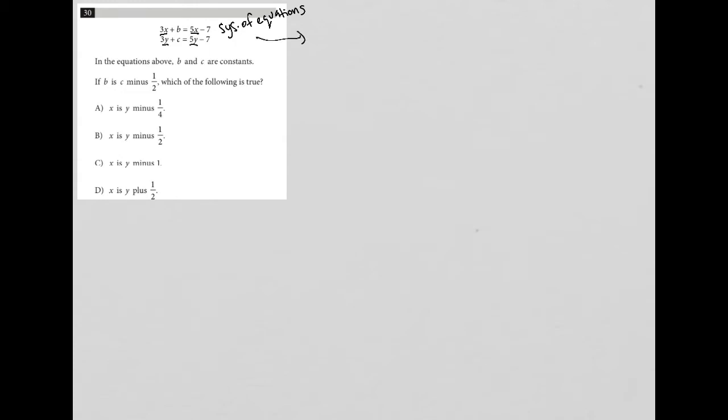So let's start off with simplifying this, and then we'll go on to read what the question actually says. I have 3x plus b equals 5x minus 7. I can simplify that by subtracting 5x from both sides, and I'd be left with negative 2x plus b equals negative 7.